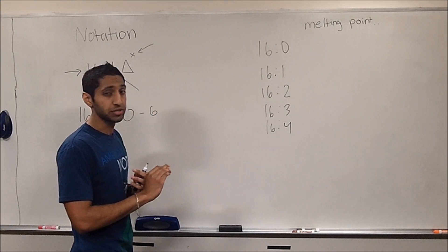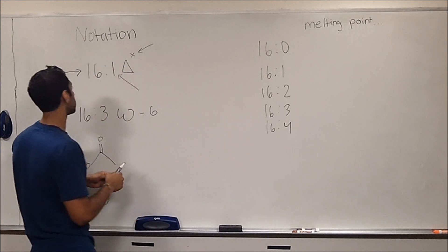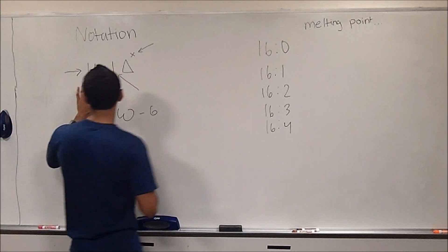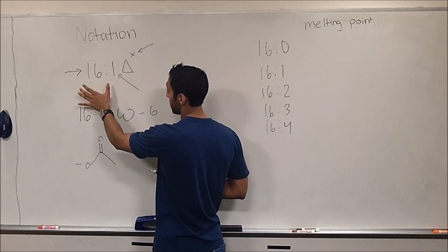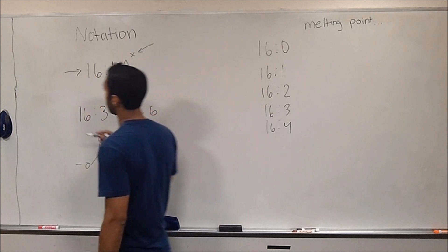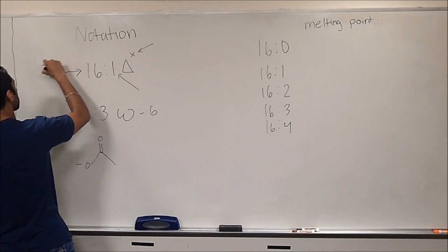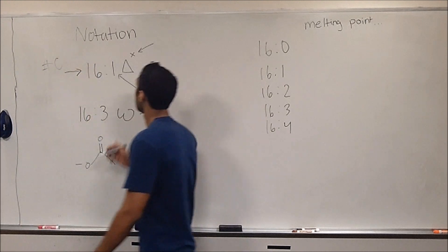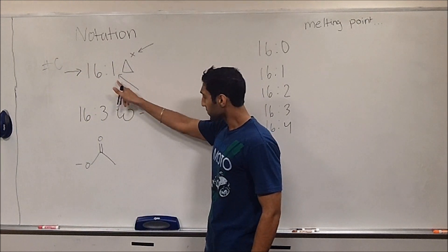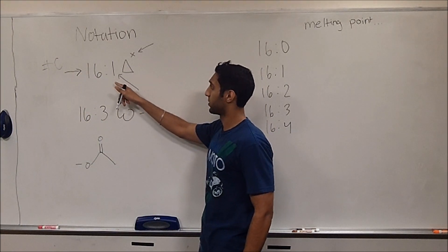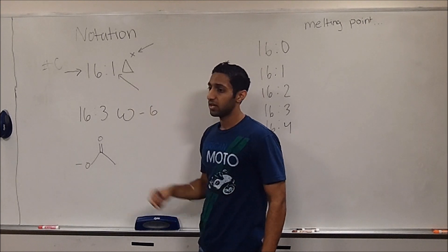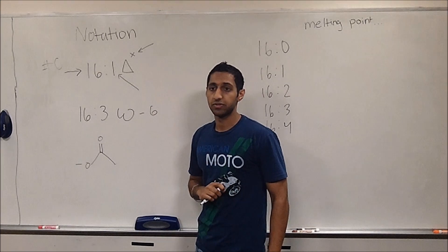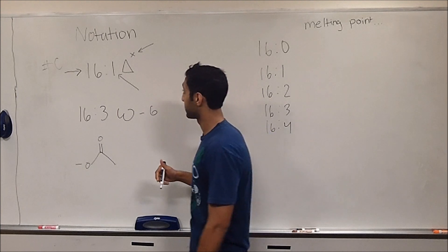The first is that you have to know the notation. The notation itself goes like this: the 16 represents the number of carbons, and the number beside it after the colon represents the number of unsaturations or double bonds that are in the fatty acids.